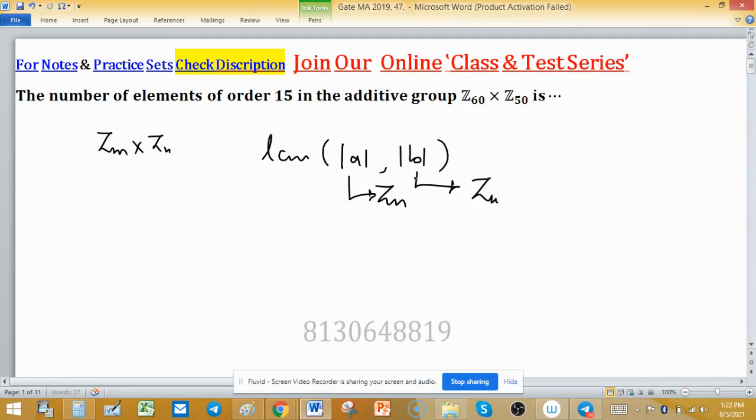We are seeking those elements having their orders form LCM as 15. So how can we get 15 as an LCM? Whenever the order of elements will be (5,3), the LCM can be 15. Or (15,1), LCM can be 15. Or (15,5). So these are the possibilities of orders of elements where we can form 15 as the LCM.